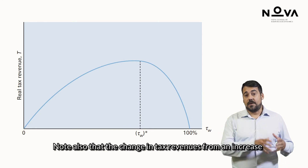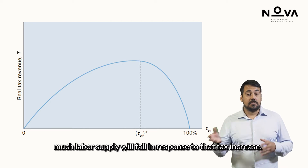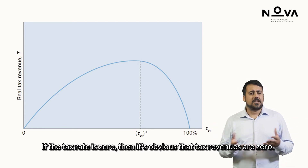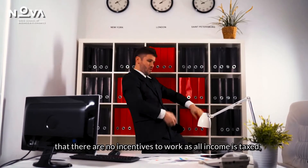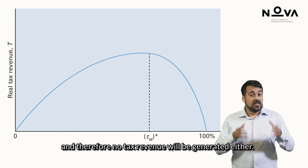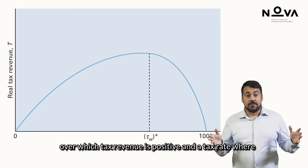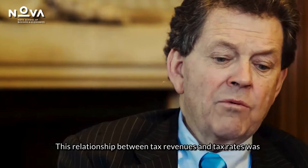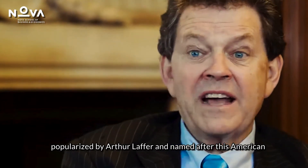The change in tax revenues from an increase in the marginal labour income tax rate will depend on how much labour supply falls in response. If the tax rate is zero, tax revenues are obviously zero. But if the tax rate is 100%, there are no incentives to work, so no tax revenue is generated either. Somewhere between these two extremes, there is an interval over which tax revenue is positive, and the revenue-maximising tax rate is τ_w*. This relationship between tax revenues and tax rates was popularised by Arthur Laffer and named after this American economist.